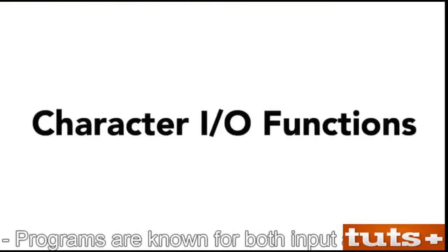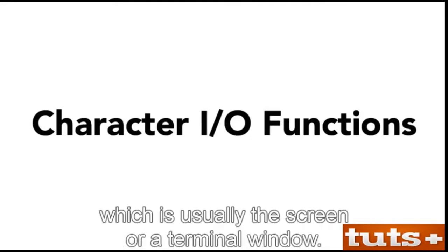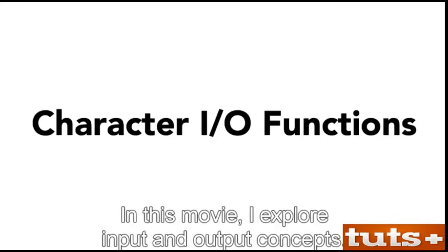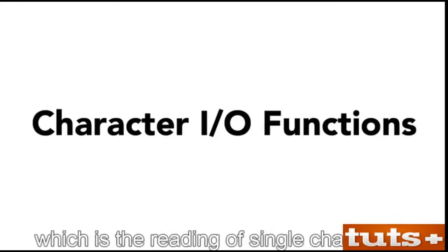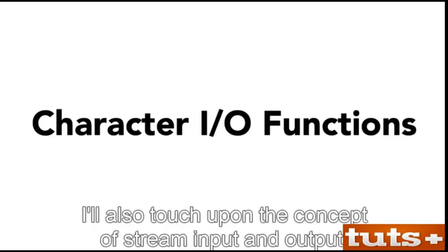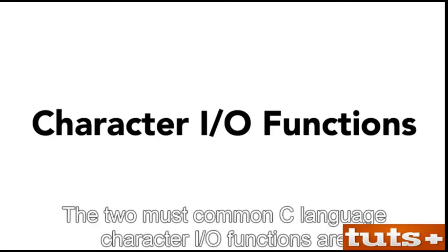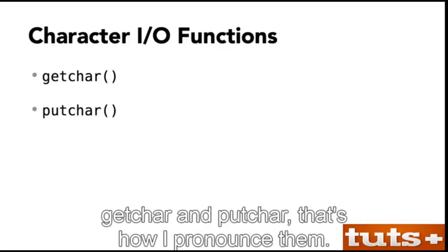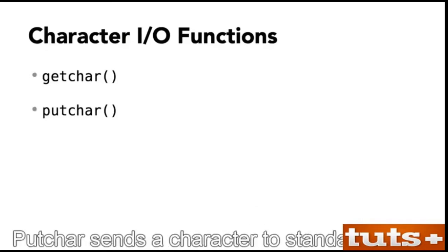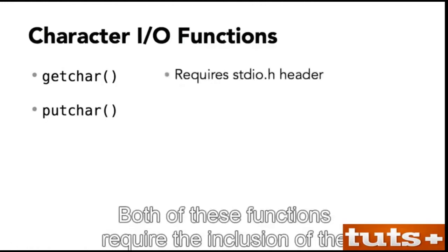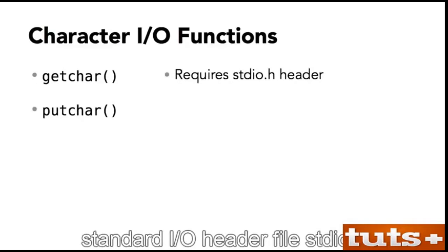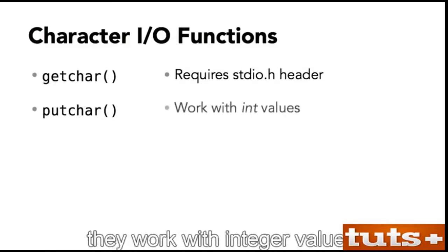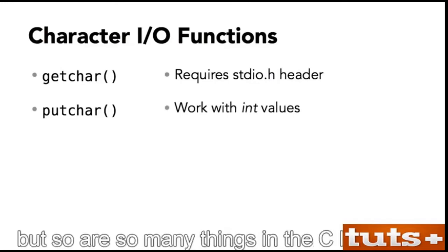Programs are known for both input and output. Output goes to the standard output device, which is usually the screen or a terminal window. Input comes from the standard input device, which is normally the keyboard. In this movie, I explore input and output concepts involving character I/O, which is the reading of single characters, as well as the output of a single character. The two most common C language character I/O functions are getchar and putchar. Getchar fetches a character from standard input; putchar sends a character to standard output. Both of these functions require inclusion of the stdio.h header file.